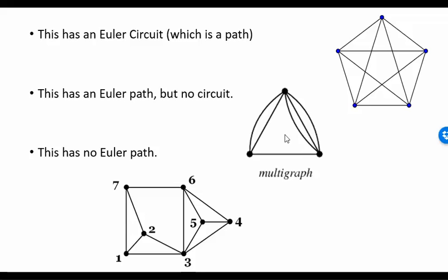In this multigraph, we have an Euler path but no Euler circuit. This vertex has degree three, this vertex has degree five, and this vertex has degree four. You need to begin and end your path at a vertex with odd degree. So I'm going to start here, for example, come up here and back, then across here, up, back, and up — and I'm going to end at this particular vertex.